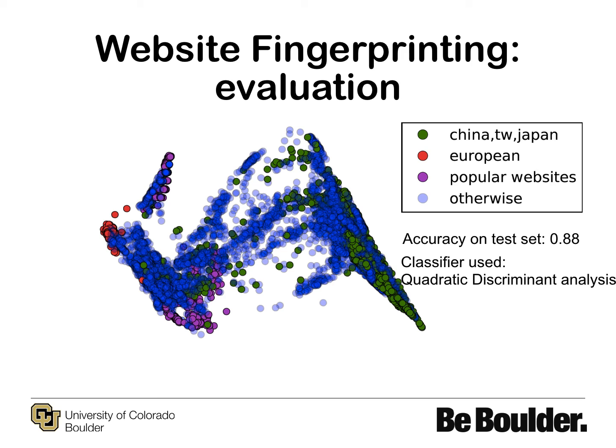The accuracy on the test set is 88%, and the classifier we used is quadratic discriminant analysis. We infer that the LSTMs have learned to push websites into unique feature spaces and derive the feature vector by aggregating their differences.